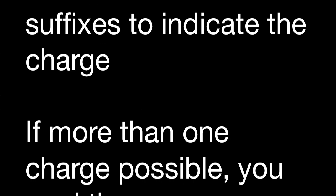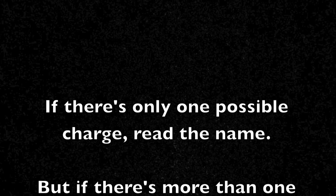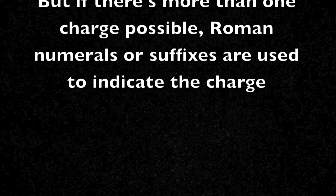Do you know how to name monatomic cations, Bella? I do not. Well, if there's only one possible charge, you use roman numerals or suffixes to indicate the charge. But if there's more than one charge possible, you just read the name. Cooperus, you're so stupid. This is how you name monatomic cations: if there's only one possible charge, just read the name. But if there's more than one charge possible, roman numerals or suffixes are used to indicate the charge. Wow, Jacob, you're so smart. Thanks, Bella.